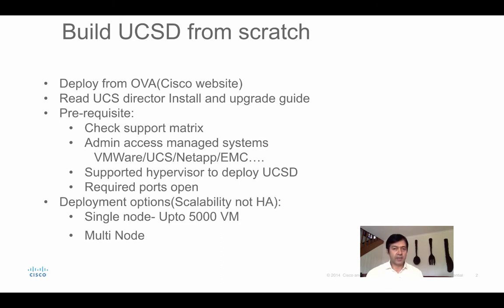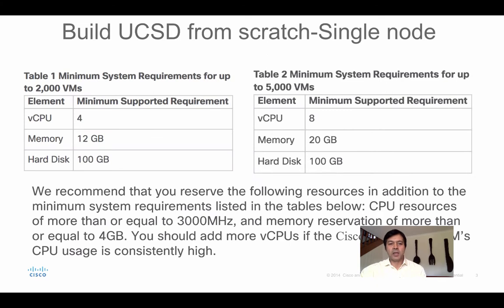Multi-node is not for HA — it doesn't provide HA capability. For HA, Cisco recommends taking advantage of the hypervisor's own HA capability, whether VMware, Hyper-V, or KVM. They don't intend to adopt an HA feature in UCS Director. The system is not super-critical in the sense that if one goes down there's a workaround. The official stance is HA should come from the hypervisor, and multi-node is for scalability. My demonstration will be on single node, and I'll cover a few slides on multi-node considerations.